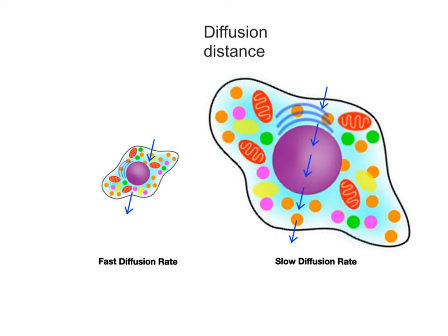The distance that solutes have to diffuse across is also important. This is why plasma membranes are so thin, and cells aren't as big as beach balls. It doesn't take long for chemicals to move across short distances. Therefore, smaller cells have faster diffusion rates. The longer the distance a chemical has to move across a cell, the slower the diffusion rate.